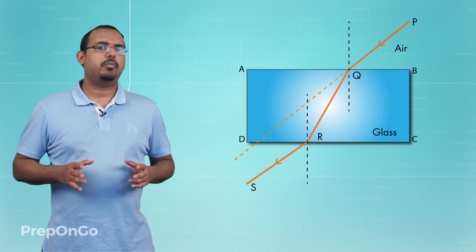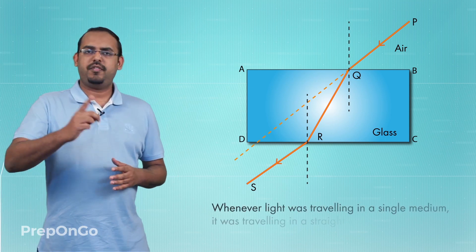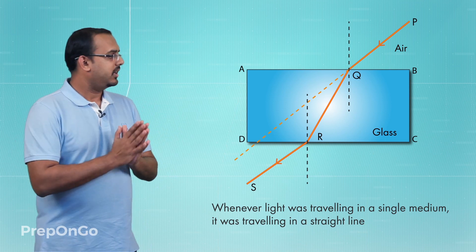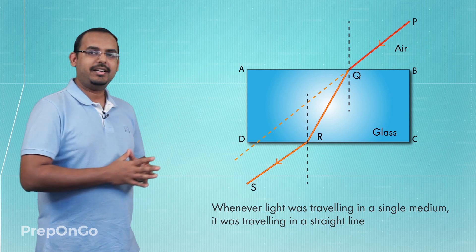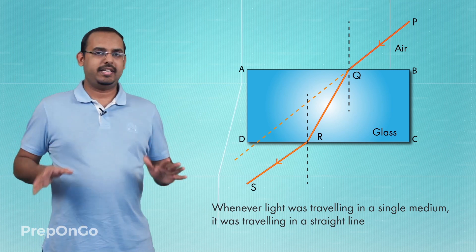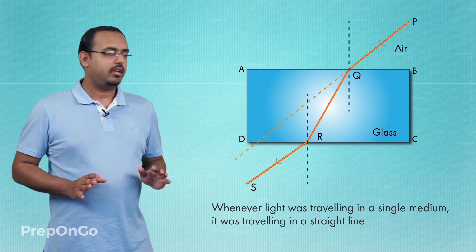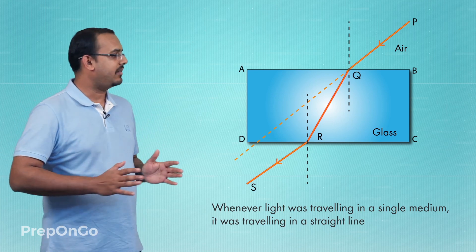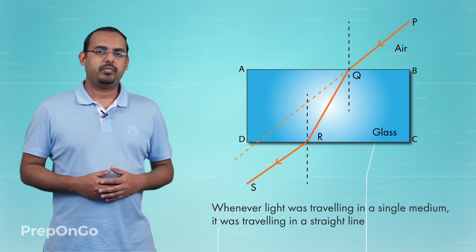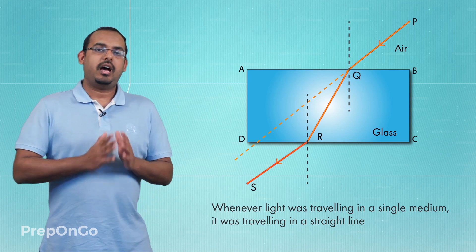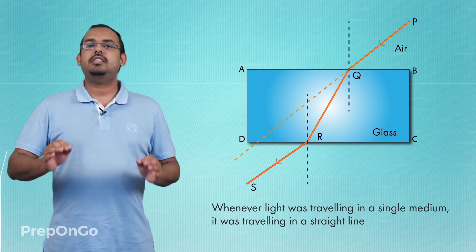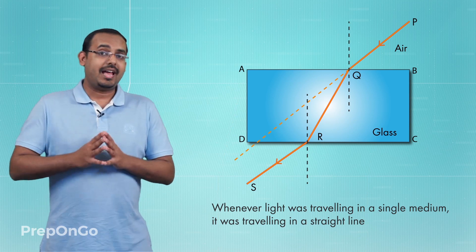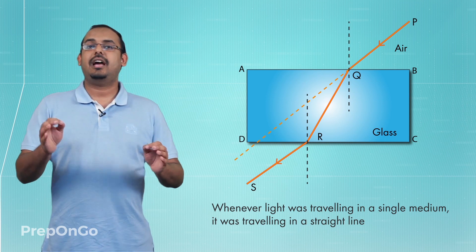There are two important observations we can make from this phenomenon. The first observation is that whenever light was traveling in a single medium — be it air or glass — it was traveling in a straight line path. Before entering the glass slab, light was only in air and traveled in a straight line. Inside the slab, light traveled through glass in a straight line. After exiting, back in air, it again traveled in a straight line.